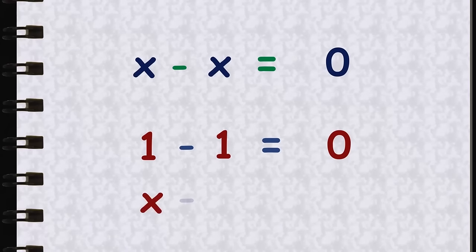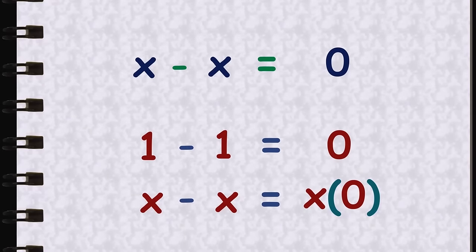In real number line, x minus x is 0. And in universal number line, only 1 minus 1 is 0. x minus x is x0, where various values of x represent various points on the universal number line.